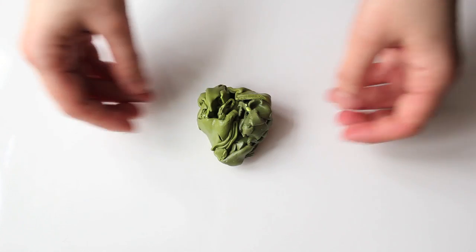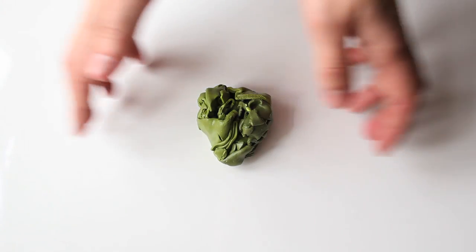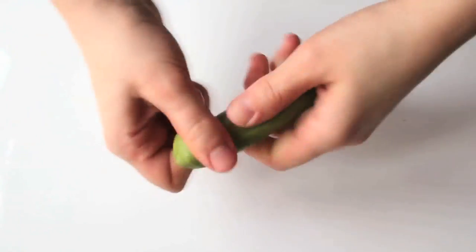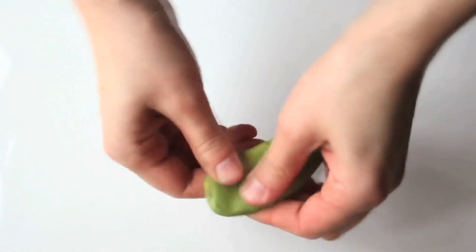We will start by conditioning the green scrap clay. You can use a new pack of clay too. I just had this wonderful shade left over from another project so I decided to use it here. Condition your clay properly and prepare it for the pasta machine.